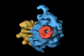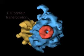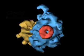This model, derived from an electron microscopic reconstruction, shows a yeast ribosome with the protein translocator of the endoplasmic reticulum attached.